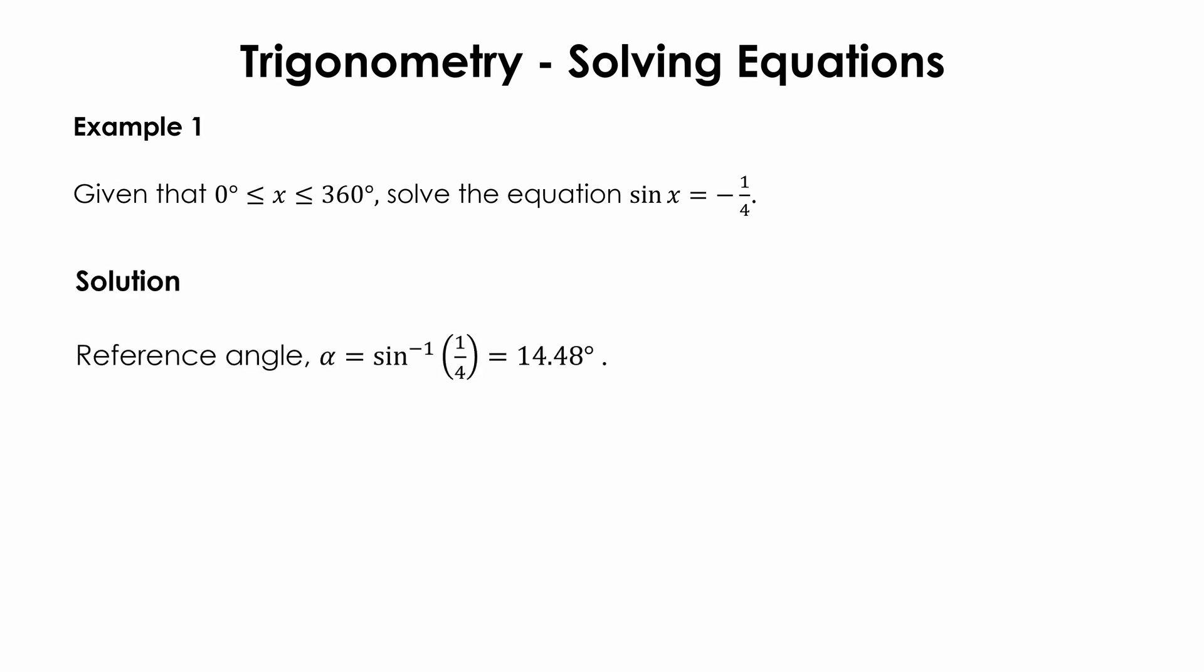First, find the value of the reference or basic angle. As we are finding the acute angle, take the inverse sine of 1/4. Do not include the negative sign. Remember, to find the reference or basic angle, we use only the positive value of the trigonometric ratio.